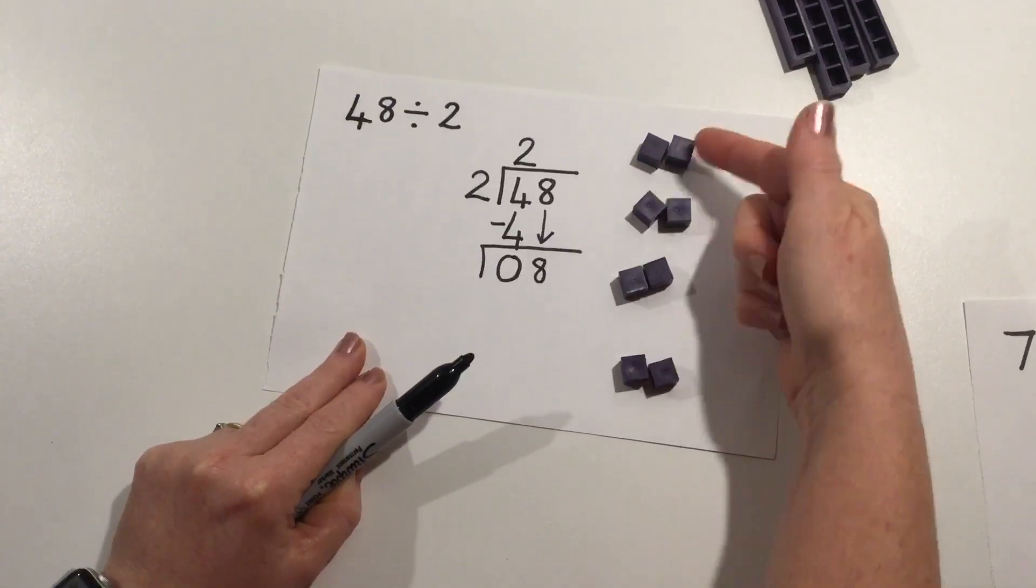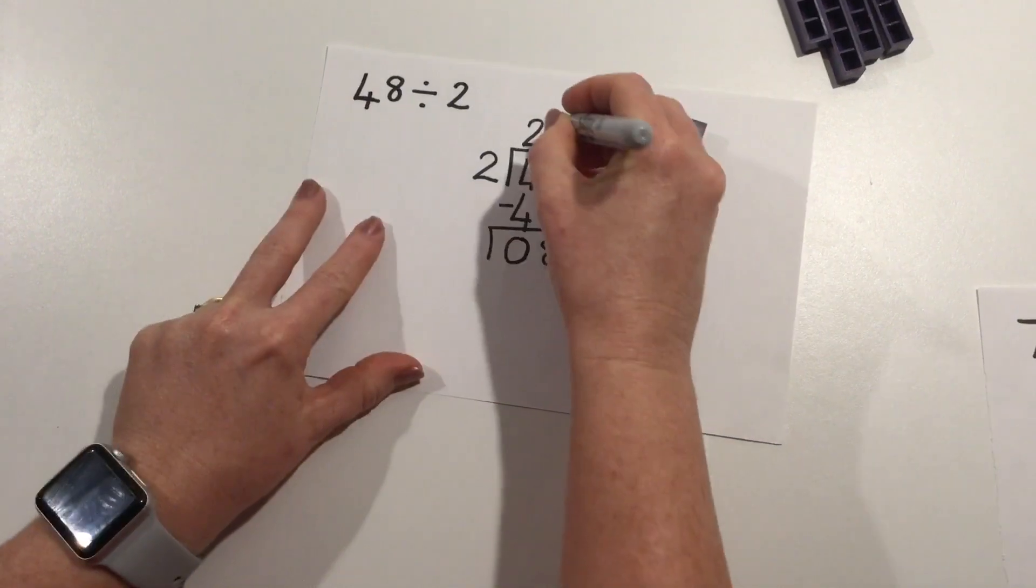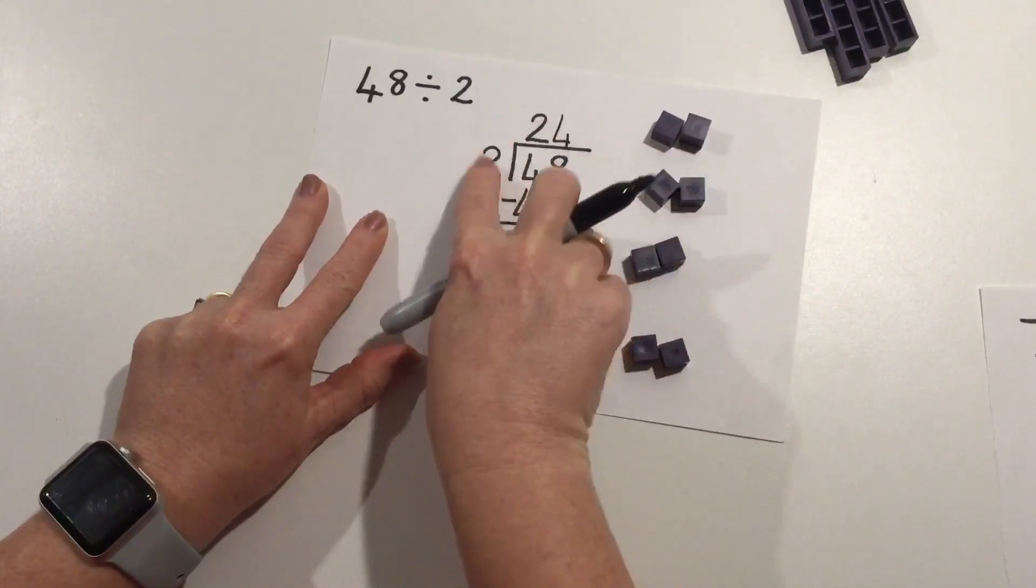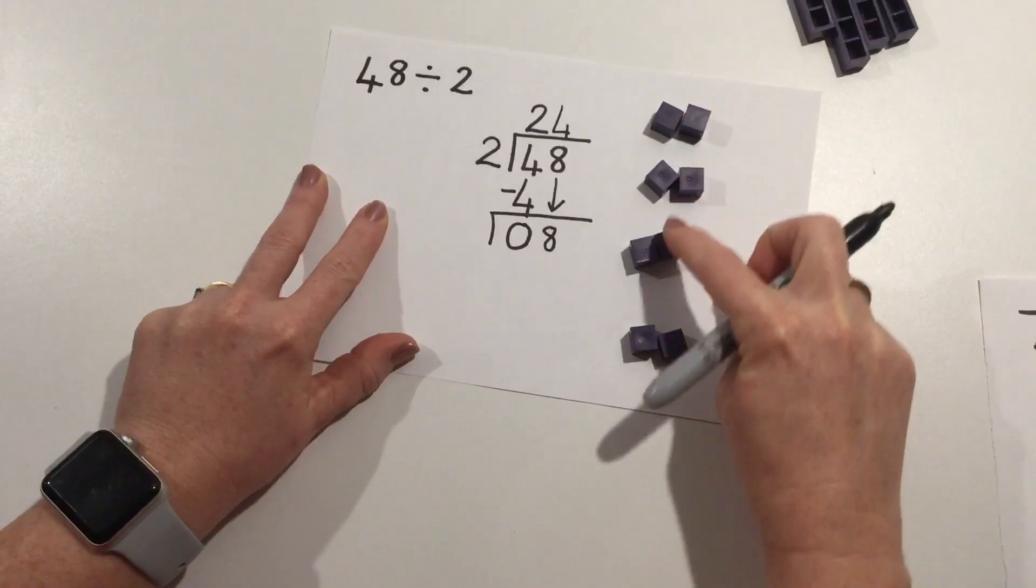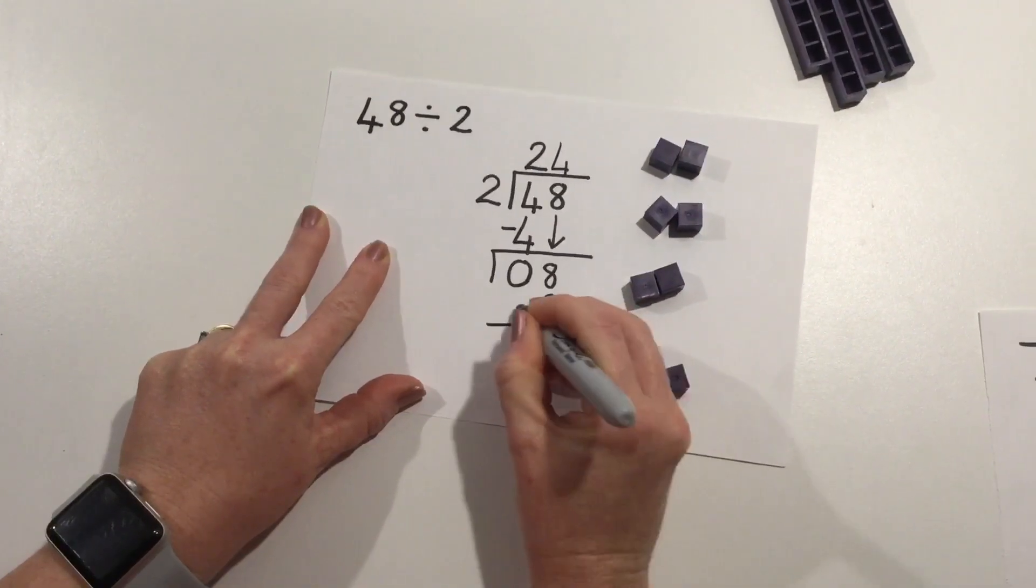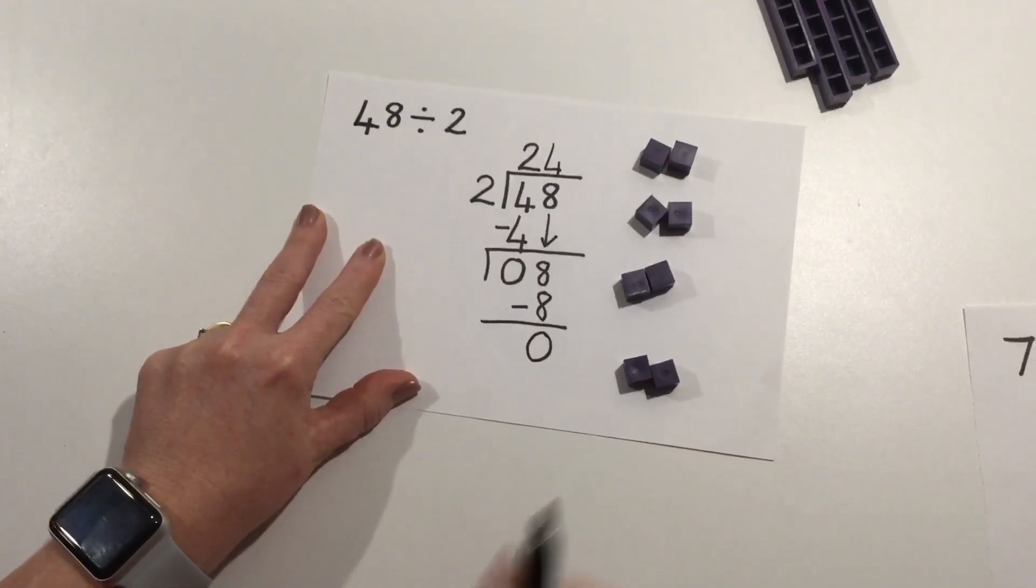So 2, 4, 6, 8. You can see I've got 2, 4, 6, 8. I've got 4 groups. 4 groups of 2, or 4 times 2 is 2, 4, 6, 8. And that shows me that I have no remainders or no leftovers.